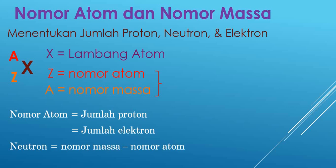Untuk lebih jelasnya, mari kita simak contoh soal berikut. Kita ambil contoh salah satu unsur kalium. Kalium memiliki nomor atom 19 dan nomor massa 39.